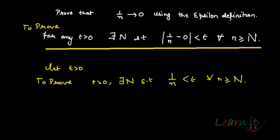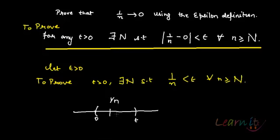So essentially, if we look at this on a number line — here we have 0 and here there is some epsilon — we are saying that this is 1/n, and what we are trying to say is that after this capital N, all the terms of 1/n are moving towards 0. That's what we are trying to say.